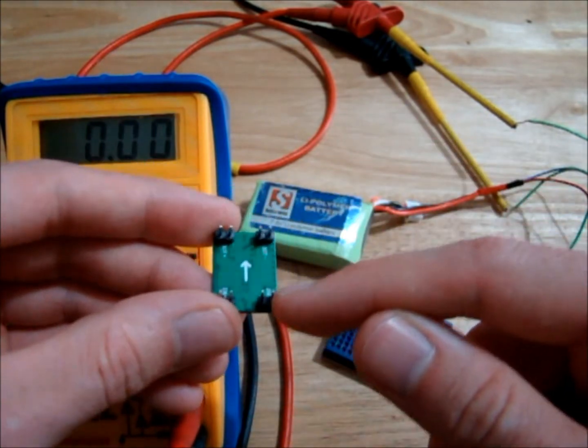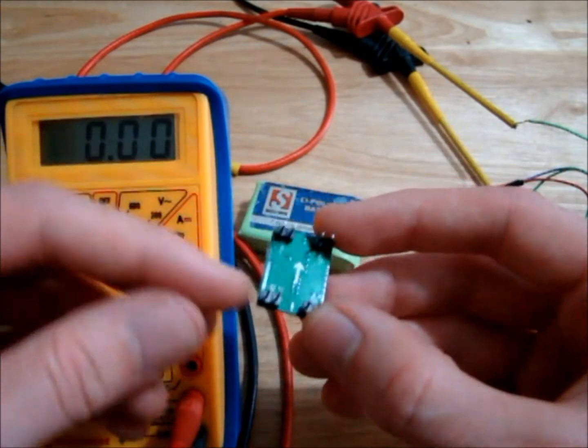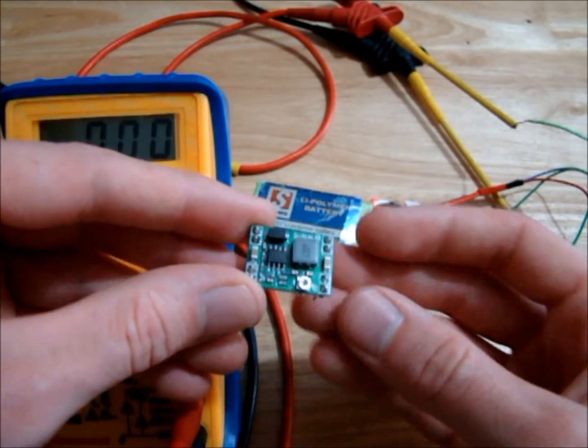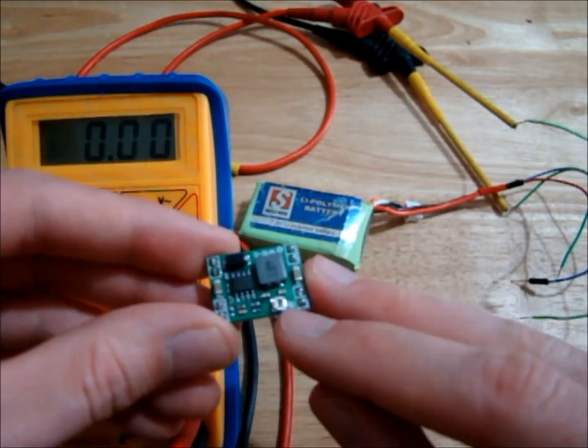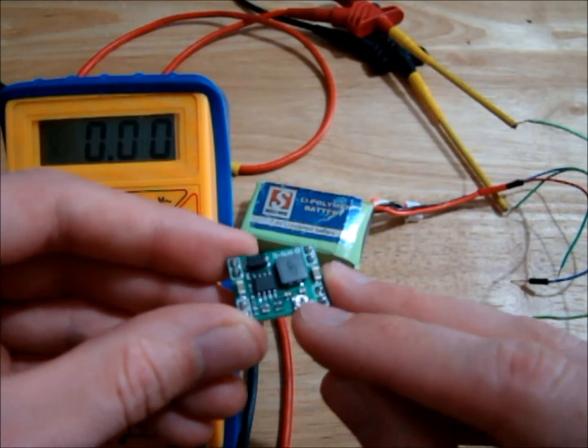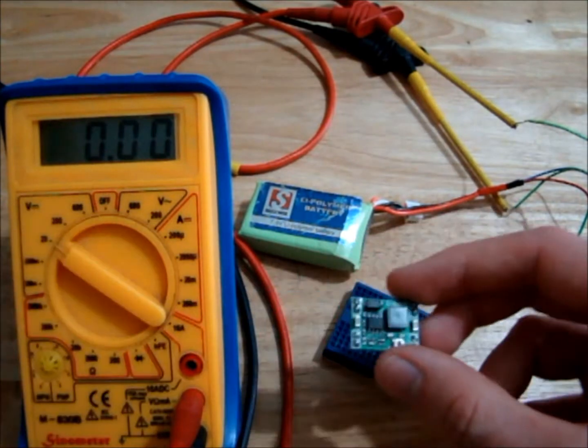And we have our input on this side, or input positive or output positive. And if we look at the front again we have a little trim pot here, and that little potentiometer will adjust our output voltage. So if we hook it up to the battery I'll give you an example of what I can do.